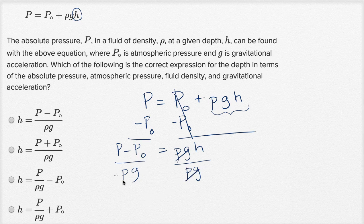And we get h is equal to capital P minus capital P sub zero over rho times g. And that is the first choice right over there.